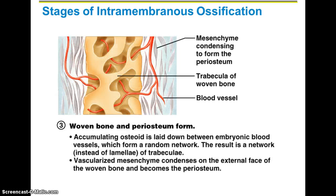Step three is when you start to see spongy bone, also known as woven bone or trabeculae. You're also going to have your periosteum form — the outer lining of tissue that surrounds the bones. You're also going to start seeing blood vessels woven through all the different layers of the trabeculae.